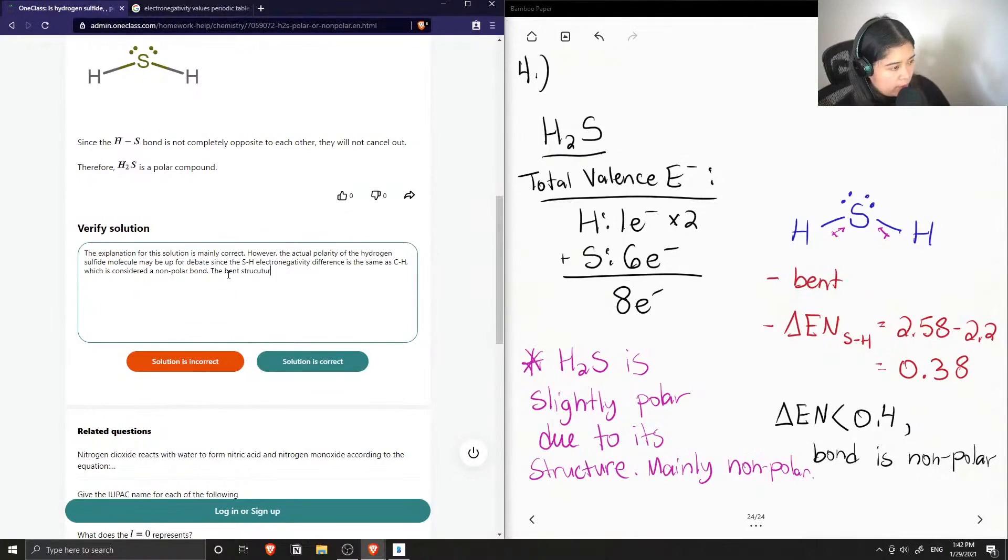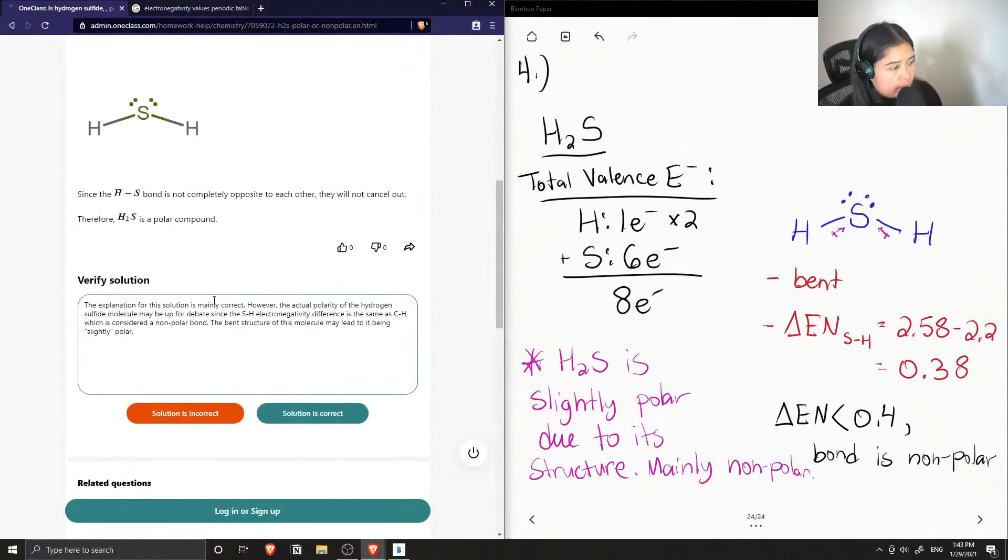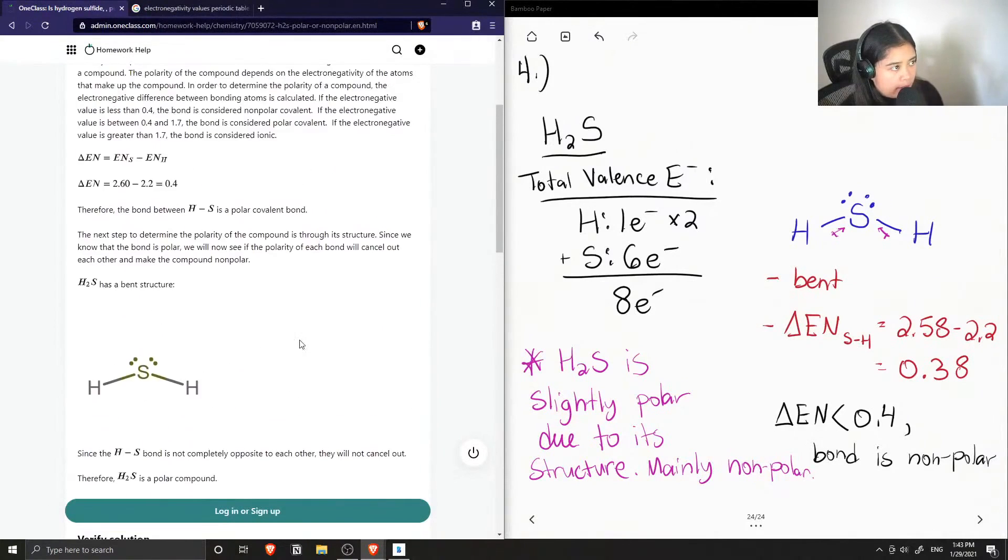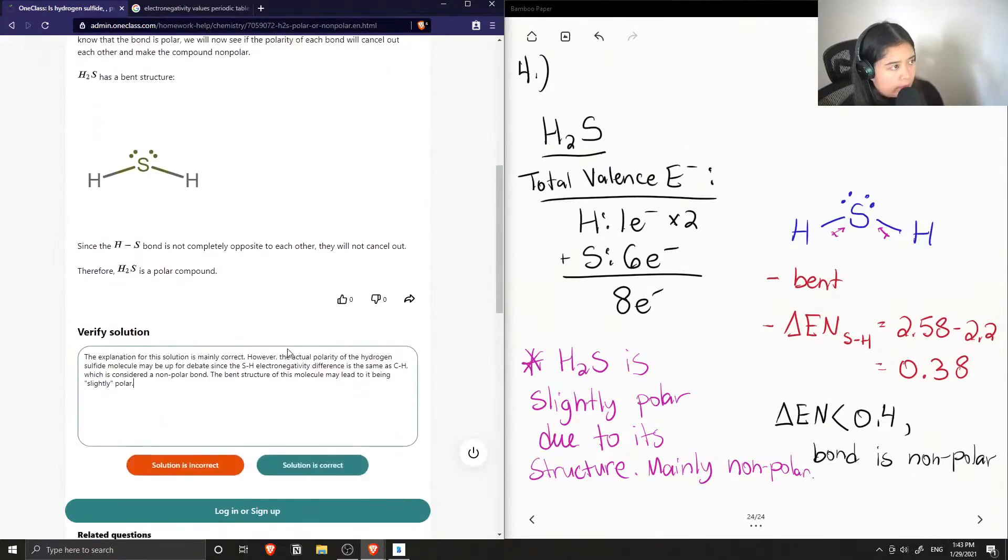The bent structure of this molecule may lead to a slightly polar molecule. Now just put it in quotation marks, slightly polar. But I'll still say this solution is correct since they gave some valid points.